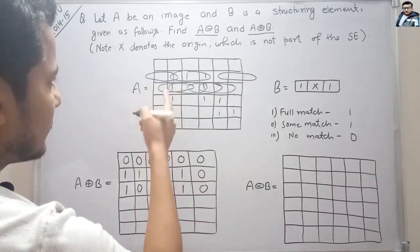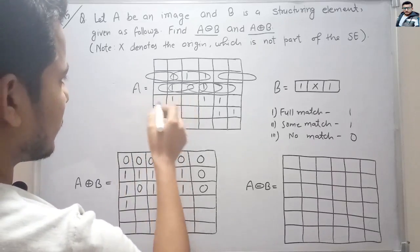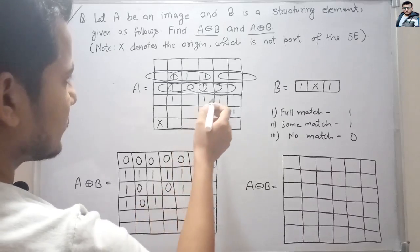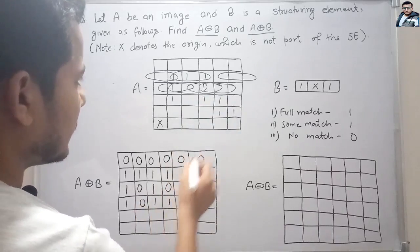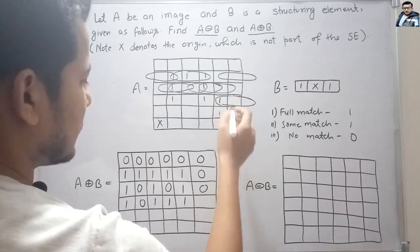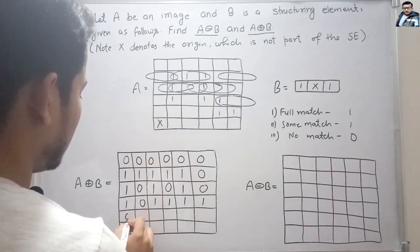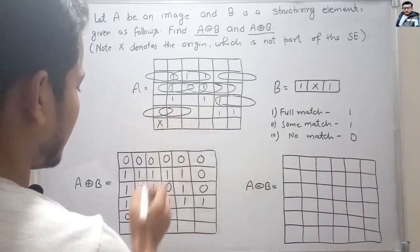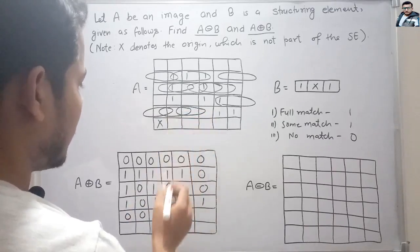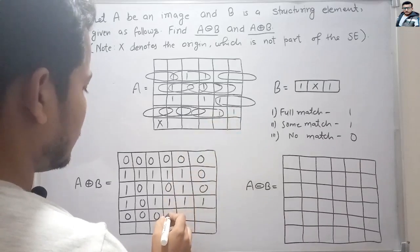Now for the next row we will have this as matching: 1. For this, no matching: 0. Again for this, matching: 1. For this, matching: 1. For this, matching: 1. And for this, matching: 1. Now here, no matching. Now here, no matching. Again no matching. Again no matching. Here matching: 1, so here 1.